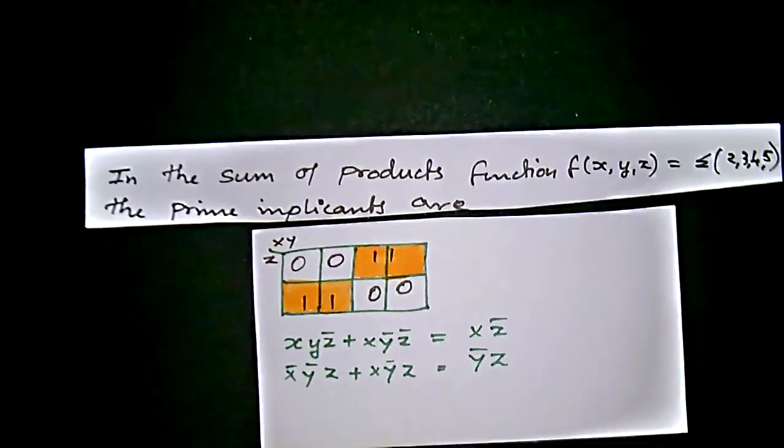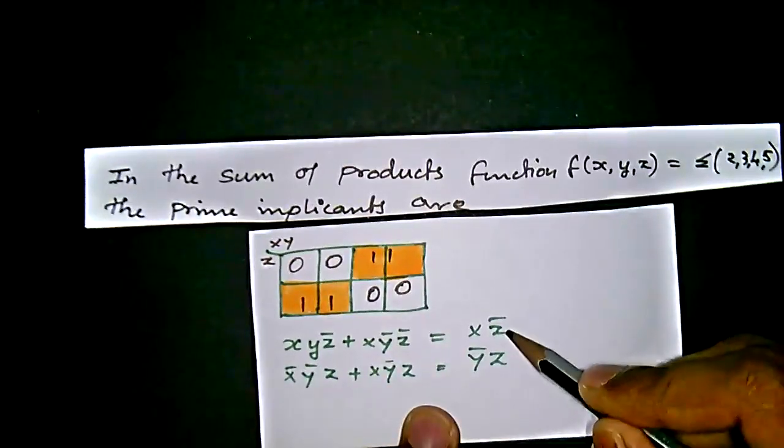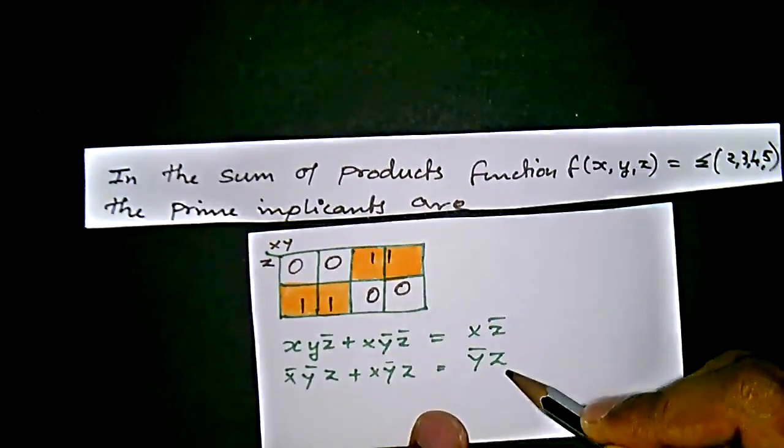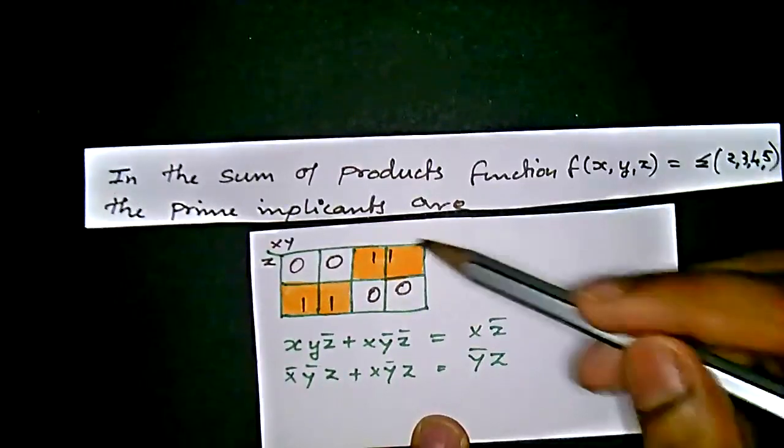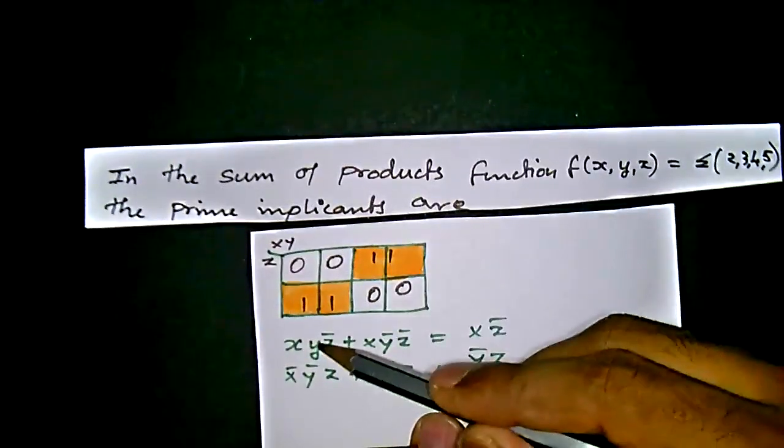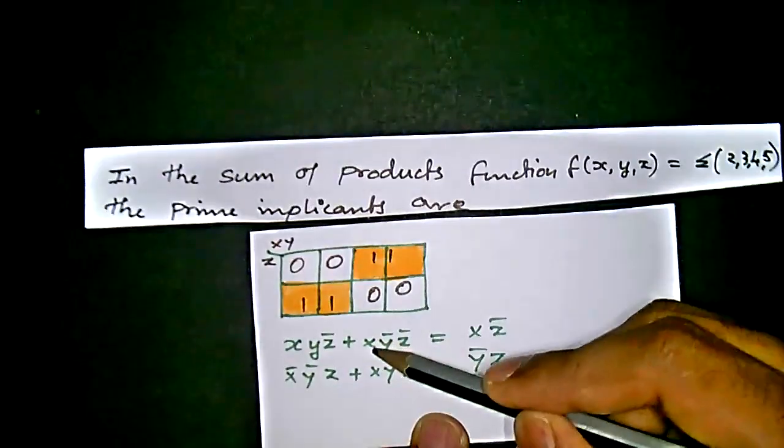If the prime implicant is the result - that is, we can't further reduce the value of that group - that can be called a prime implicant. According to this problem, the prime implicants are xz̄ and ȳz.